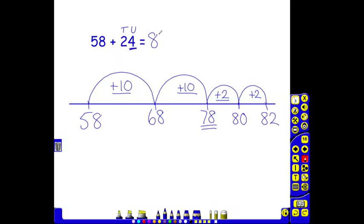So our final answer to 58 add 24 is 82 using a number line. As children become more confident, those jumps could be done more quickly. The 2 tens could be added as a 20. The 2 twos might possibly be jumped as a full 4 depending on the children's skills.